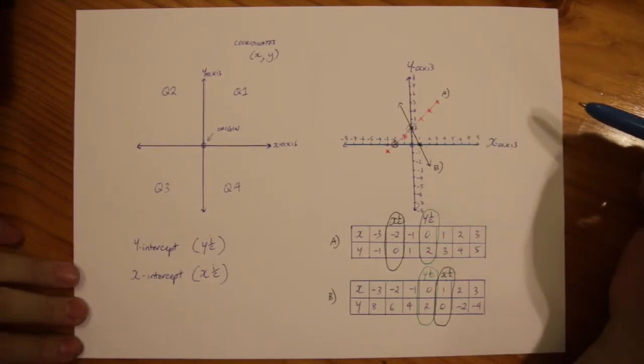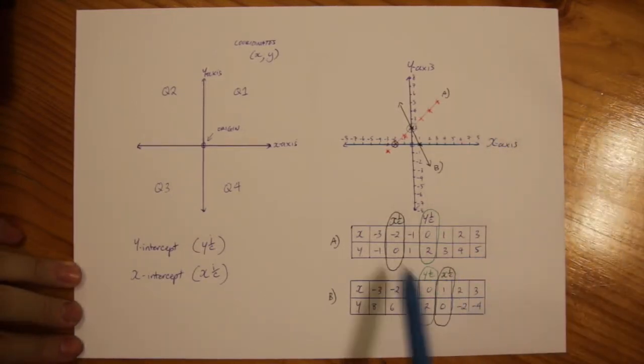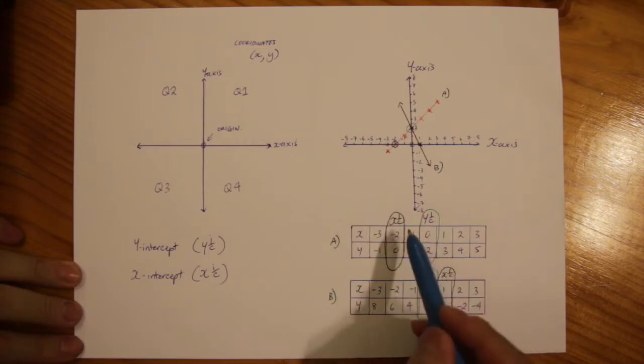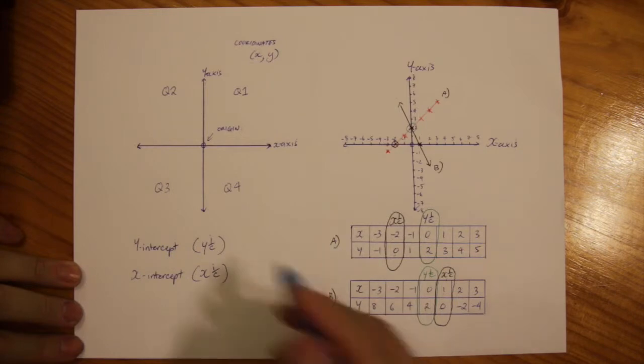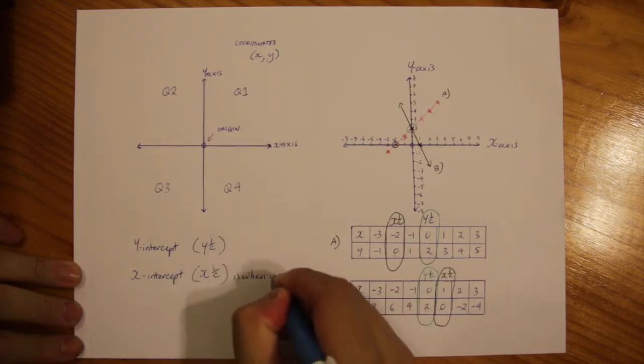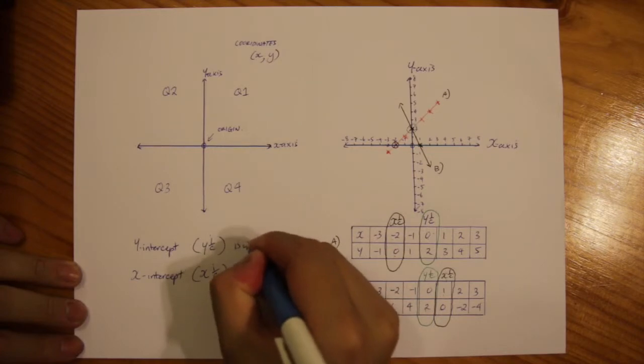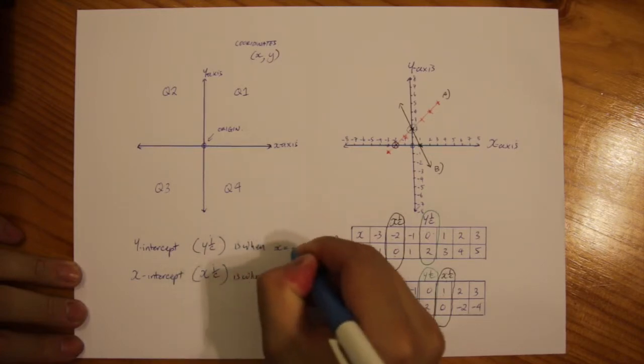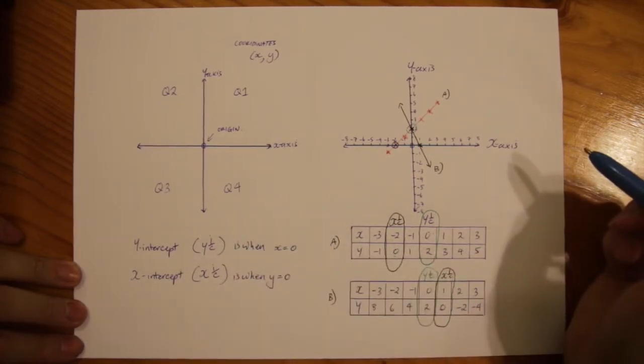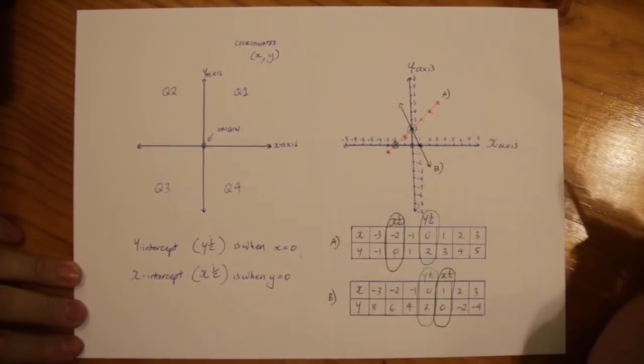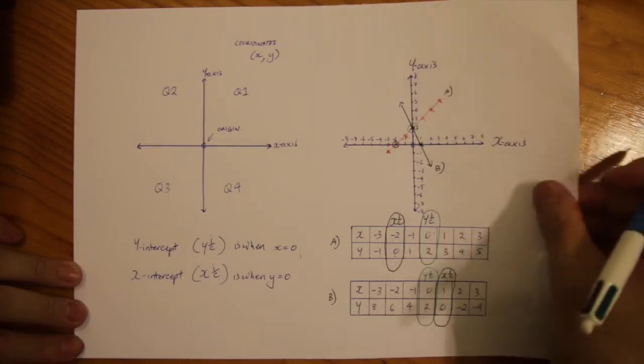Just referring back to the previous video where we have tables here. The x-intercept is found when y equals 0, and the y-intercept is found when x equals 0. Those are two things that I wanted to just refresh your memories before we actually move on.